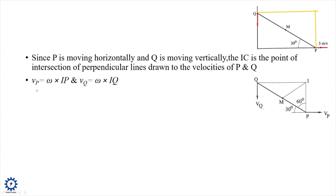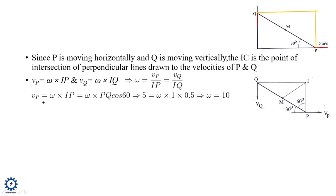Since the two velocities are non-parallel (Case 2), we draw perpendiculars to find the IC, marked as I. We know vp = omega × IP and vq = omega × IQ. To find omega: vp = omega × IP, where IP = PQ × cos30°. With vp = 5 m/s, we get omega = 10 rad/s.